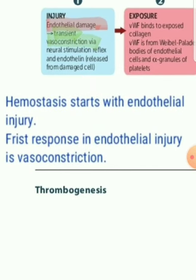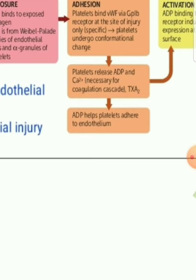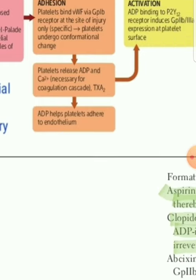Primary plug formation is triggered by endothelial injury, and overall hemostasis — primary and secondary — is also triggered by endothelial injury. The first response is vasoconstriction, then adhesion takes place, and platelet releases ADP and calcium — which is Factor 4 of the coagulation pathway. Certain factors overlap in both primary and secondary pathways. Calcium is common to both, and thromboxane A2 is the main thing involved in platelet contraction and activation.